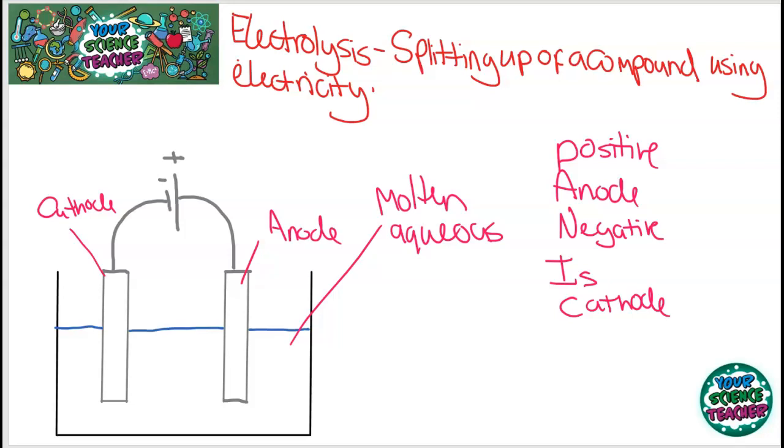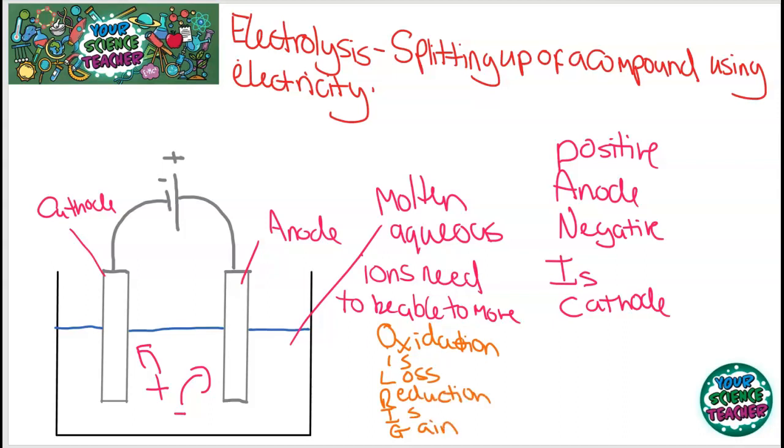Electrolysis works on the principle of opposite charges attracting one another. When the positive ions hit that cathode, they become reduced. To remember whether it's oxidized or reduced, I use the term OIL RIG. That's another mnemonic and that stands for oxidation is a loss, and reduction is gain. When the positive ions hit the cathode, they become reduced because they gain electrons. When the negative ions hit the anode, they become oxidized as they lose the extra electrons.